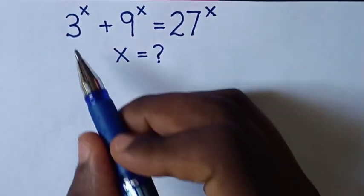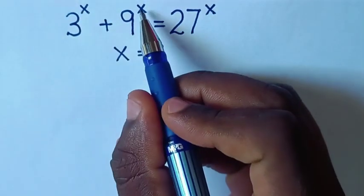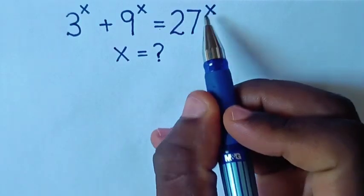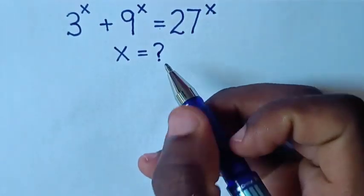Hello. Given that 3 power x plus 9 power x is equal to 27 power x, we need to find the value of x.